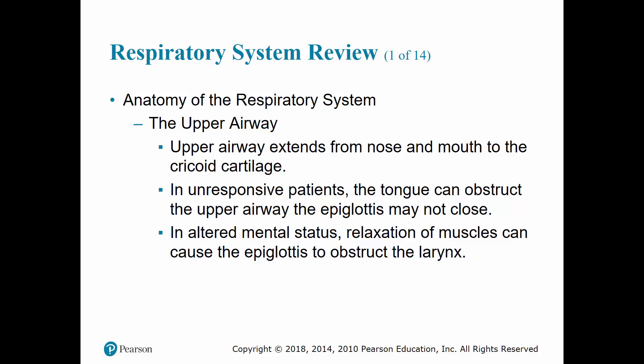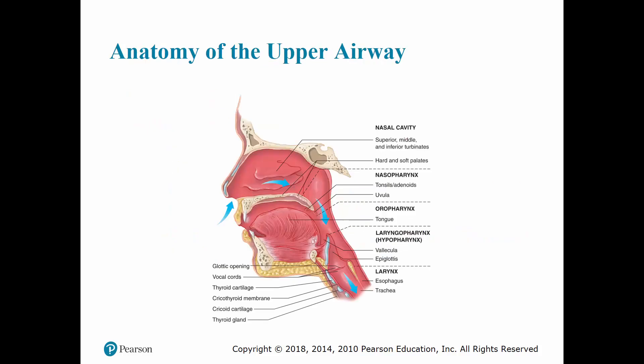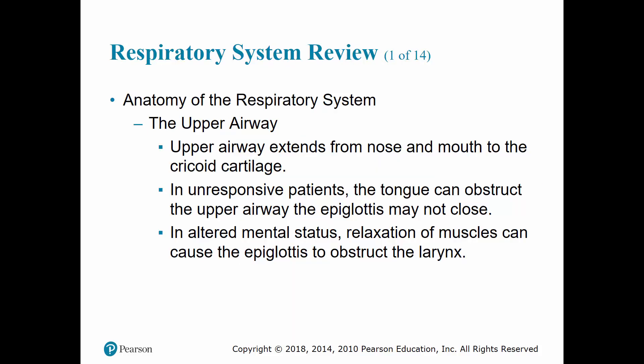Within your upper airway, air entering the body through the nostrils is warmed, moistened, and filtered as it flows over the damp sticky mucous membranes lining the nose. Air entering through the mouth and nostrils then travels into the pharynx. The trachea is the passageway for air traveling into the lungs.